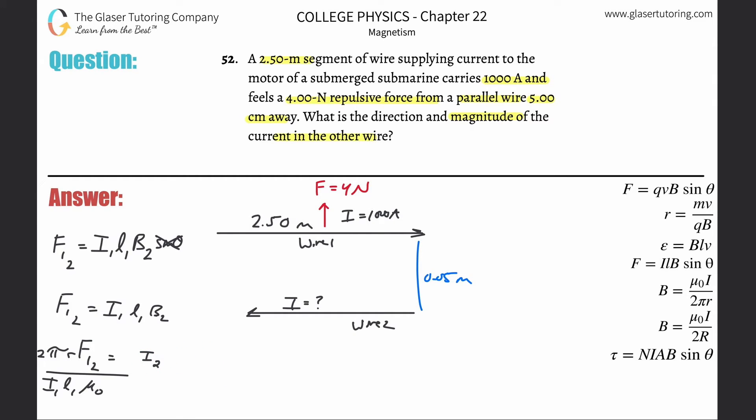So this is now equal to 2π. Actually, forget about it. Let's just leave it. Let's just plug everything on in. So this is going to be 2π times the distance between them, which was 0.05.